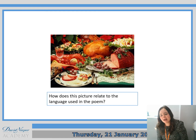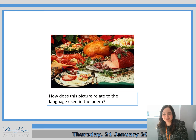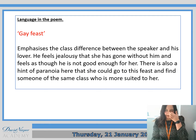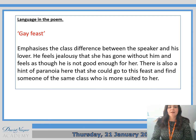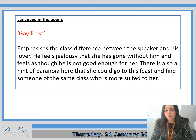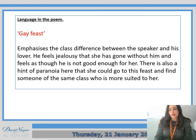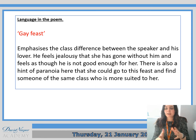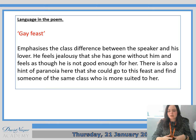Using your inference ability, how does this picture relate to a quotation from the text and can you explode that quotation? So you should have remembered the quotation 'go feast.' This emphasises the class difference between the speaker and his lover. He feels jealousy that she's gone out without him, feels as though he's not good enough for her. There's also a hint of paranoia — she could go to this feast and find someone of the same class who's more suited to her and the relationship would be much easier. And obviously we know that all this leads to him then killing her at the end of the text.